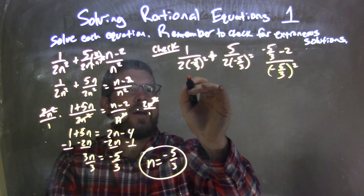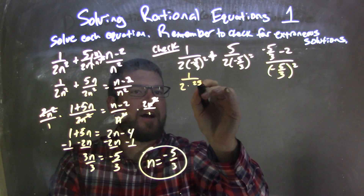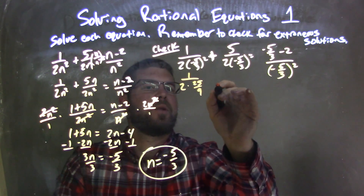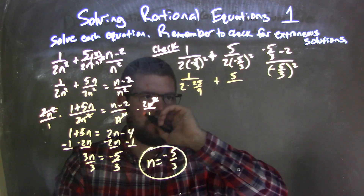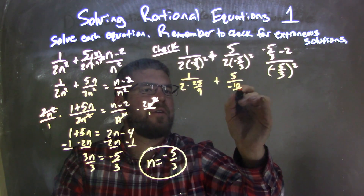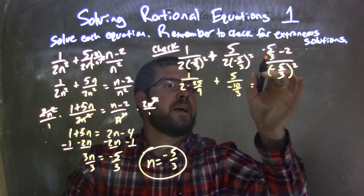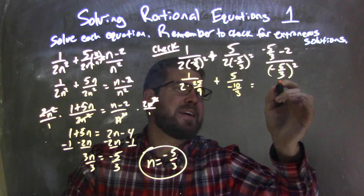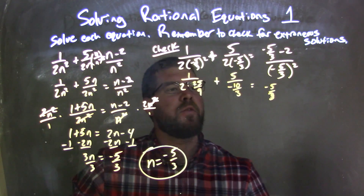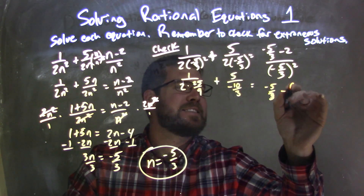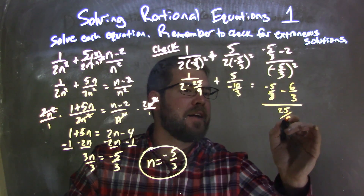Let's simplify this out. We have 1 over 2 times negative 5 thirds squared — negative 5 thirds squared is positive 25 over 9. Plus 5 over 2 times negative 5 thirds: distributing the 2 gives negative 10 thirds. On the right-hand side, we have negative 5 thirds minus 2. Minus 2 written with a denominator of 3 is minus 6 thirds, over negative 5 thirds squared, which is positive 25 ninths.